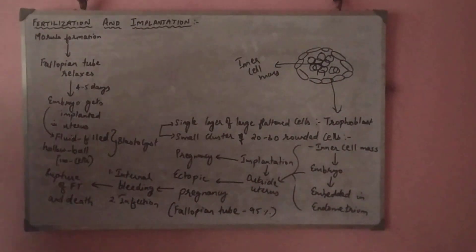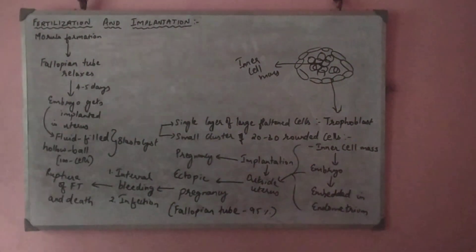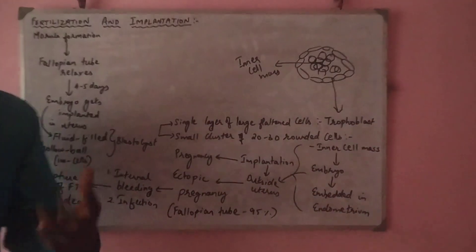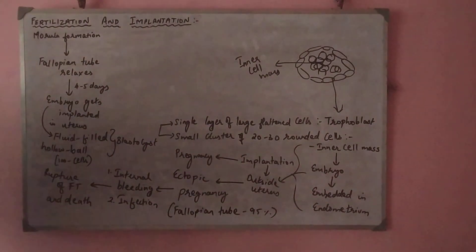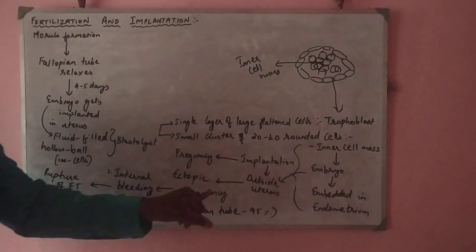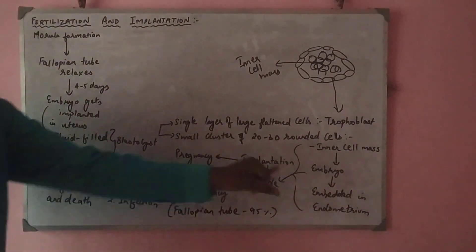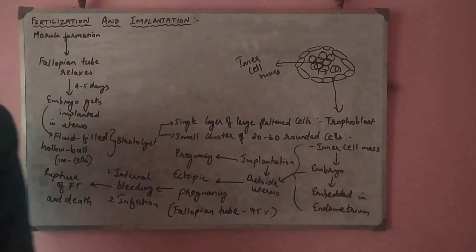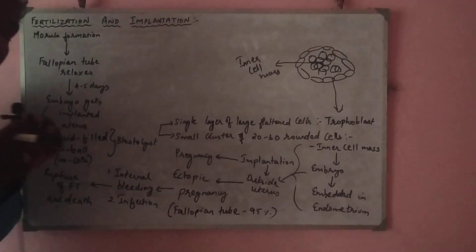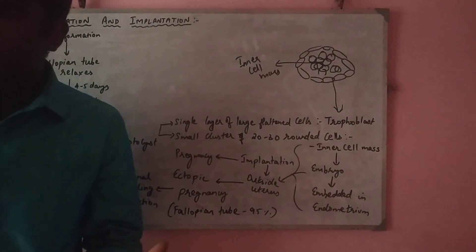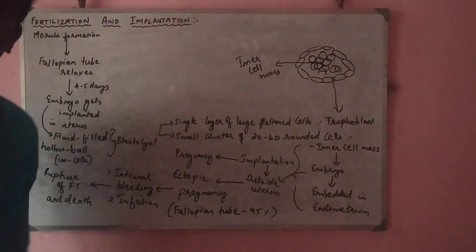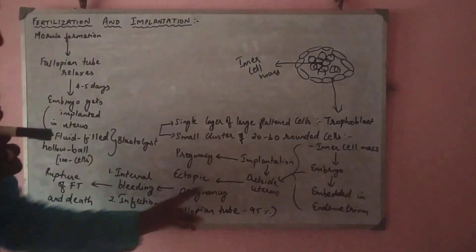Implantation marks a successful pregnancy. When a pregnancy test comes back positive, it means that implantation has happened and the embryo has got embedded in the endometrium region of the uterus. If the implantation happens outside the uterus — if the embryo gets embedded in some other part other than the uterus — then that is called an ectopic pregnancy.